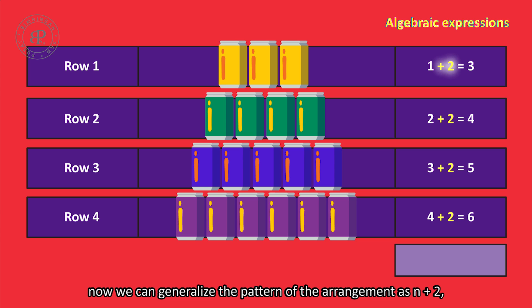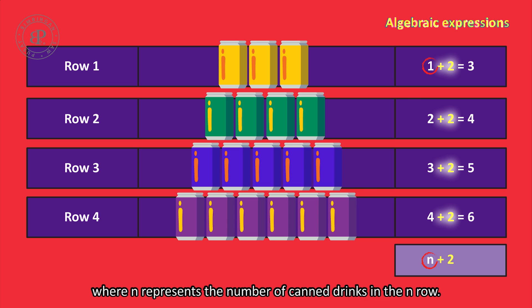Now, we can generalize the pattern of the arrangement as n plus 2, where n represents the number of canned drinks in the nth row.